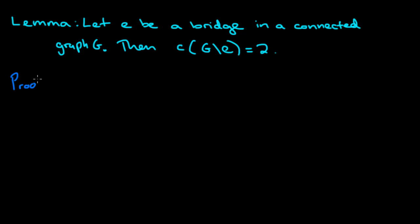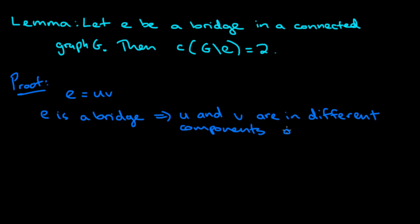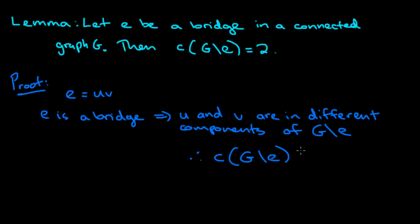Let's start the proof. We're going to let E be the edge that is a bridge, and it has end vertices U and V. Because E is a bridge, we know that U and V are in different components of G after we remove the edge E. We saw this fact in the video on the definition of a bridge. So there are now at least two components in the graph G without E, because U and V are in different components. That means the number of connected components of G without E is at least two.